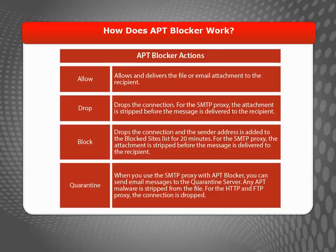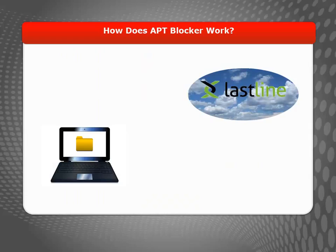When Lastline receives the hash file, it's compared to a database of previously analyzed files and the scan results are returned immediately. If the analysis shows that the file is a match to a known malware threat, your Firebox will take the action you configured when you enabled APT Blocker. The file is allowed through if it doesn't match the results of a previously known threat.